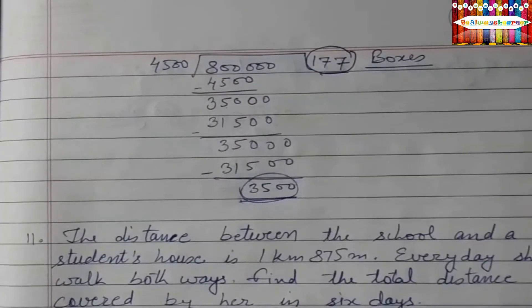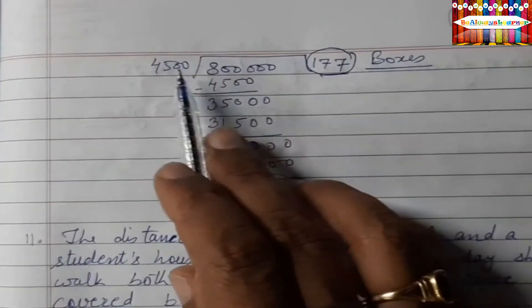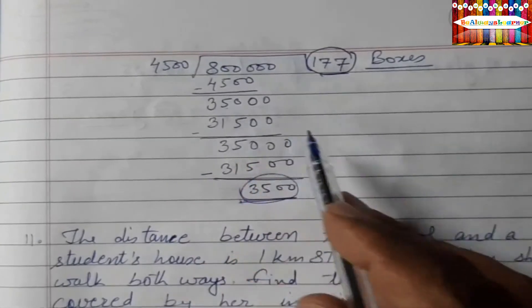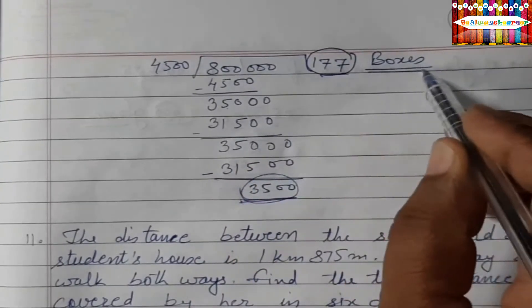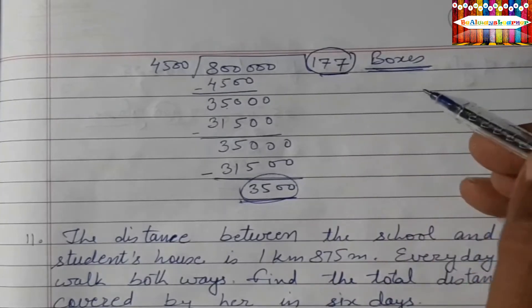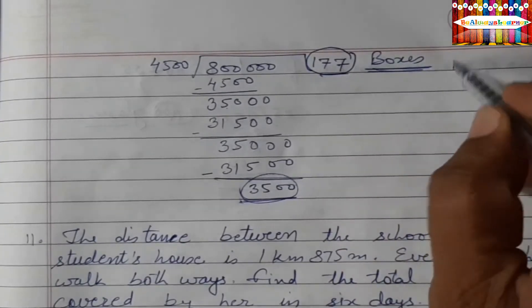So this is the rough work. We have 800,000 divided by 4500g and we have 177 boxes which will be kept in the van. So this is our answer.